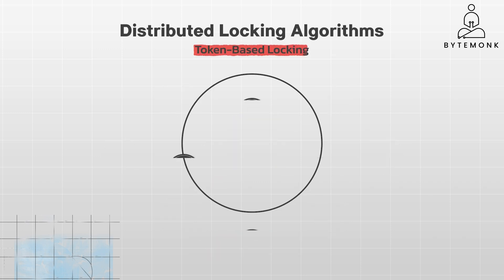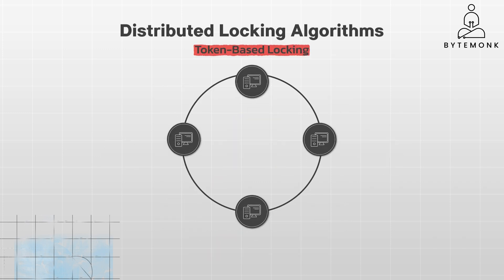In token-based locking, a unique token is passed around among nodes. Only the node holding the token can access the shared resource, and it can be more fault-tolerant than centralized locking. However, it is a little bit more complex to implement, and potential issues with token loss or expiration are always a problem.